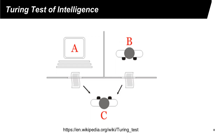For many years, humans have wished to create something that can have intelligence. The first challenge is the definition of intelligence. Alan Turing created one definition of intelligence. Suppose a person C interacts with two entities A and B, where the interactions are limited to questions and answers. In this example, A is a machine and B is a real person.